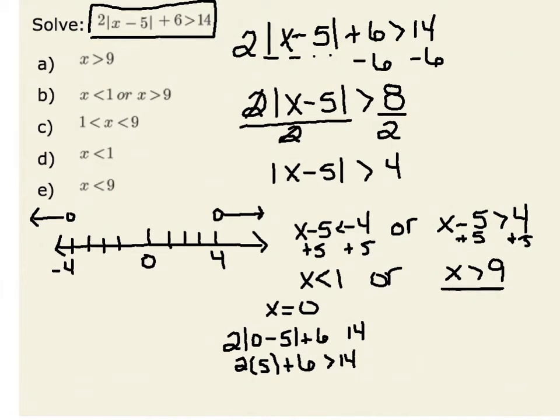Let's try a number that's greater than 9 to make sure that we have the correct solution. For example, if I say x is equal to 10. When x is equal to 10, I can substitute that back into my original inequality to get 2 times the absolute value of 10 minus 5 plus 6, and I want to know if this is greater than 14.